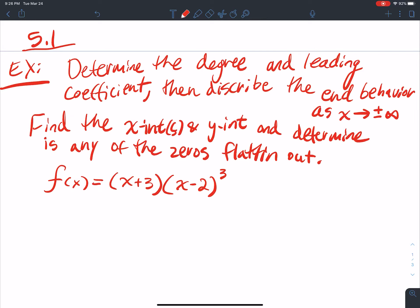All right, so we're going to work on an example from 5.1. I want to determine the degree and leading coefficient, then describe the end behavior, find the x and y intercepts, and figure out if there's any zeros that flatten out. So x intercepts and zeros, those are the same thing.